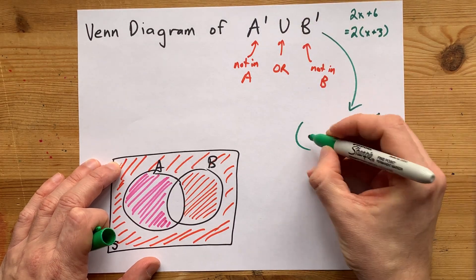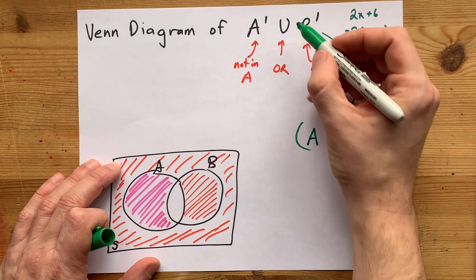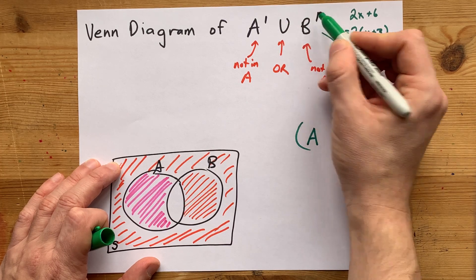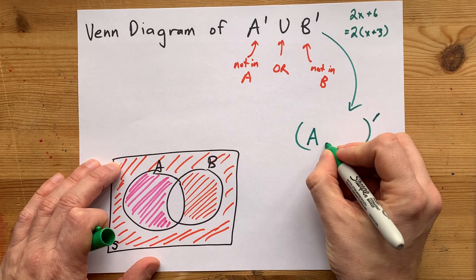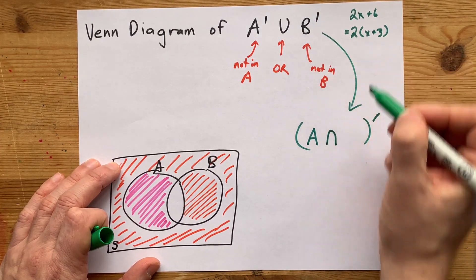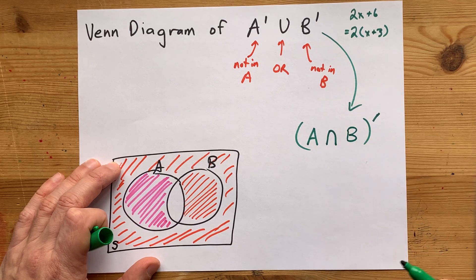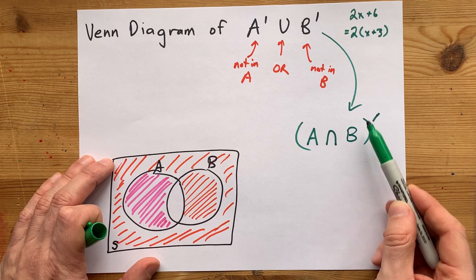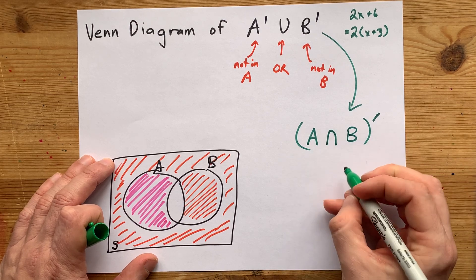A complement without the complement is A. Union, once you uncomplement it or complement it, flips to intersect. And B complement without the complement is separately B. So you should get the same diagram if you do A intersect B and then you complement that whole thing.